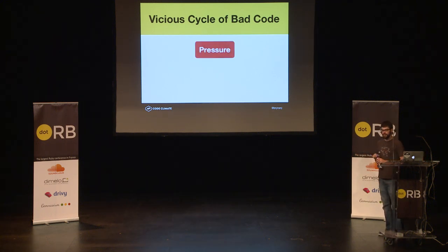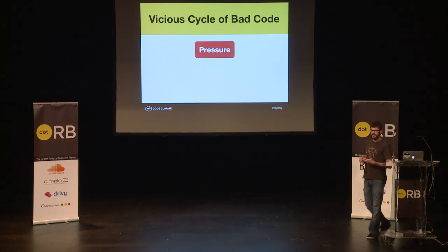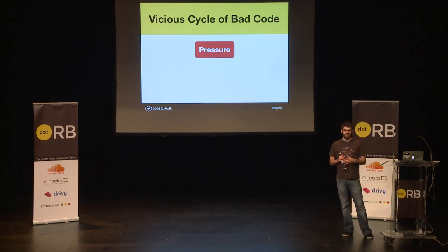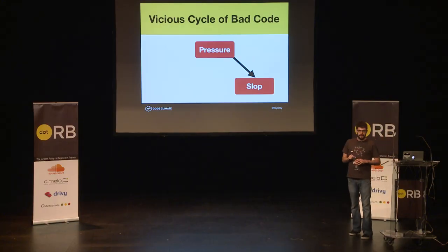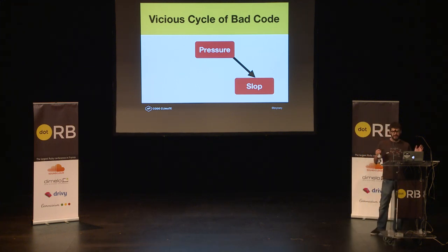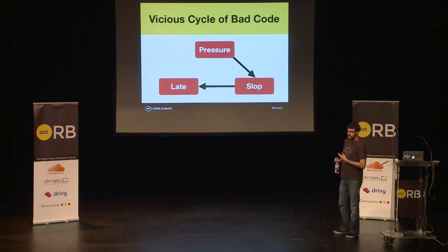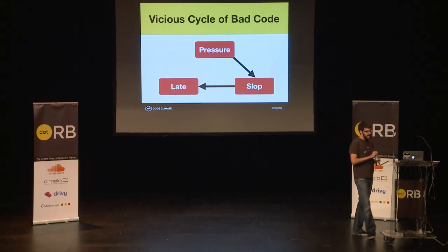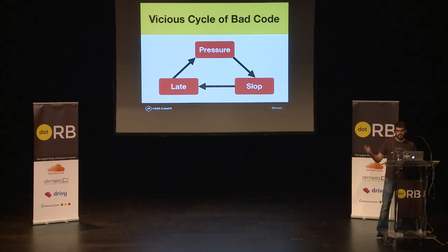Usually it starts with pressure. For whatever reason, the company has something that needs to be done by a certain period of time. Maybe a customer is demanding a feature before a certain date, or you're trying to get something done before a conference, and developers are on the receiving end of that pressure. The problem is that developers write the worst code when they are under pressure, and this can be considered slop. Slop can help you in the very short term, but over time, sloppy code causes you to be late. Eventually you won't be able to deliver software on a timely basis, and that lateness causes additional pressure. This is a vicious cycle.